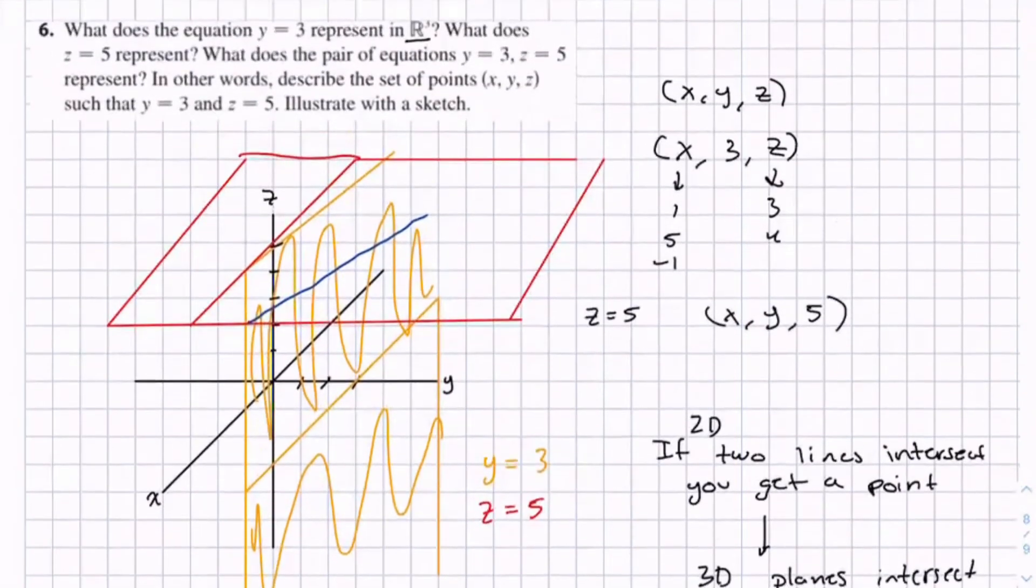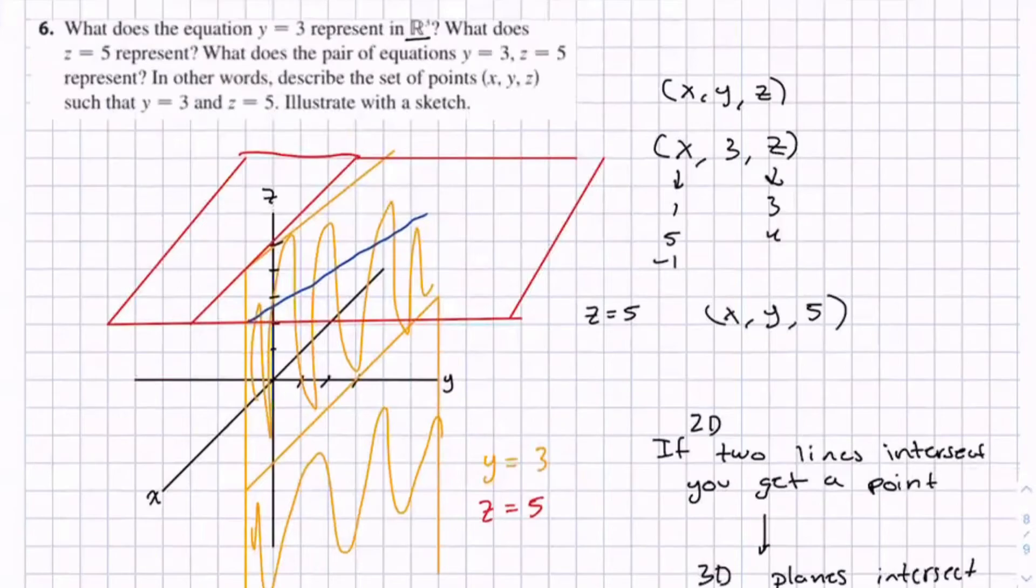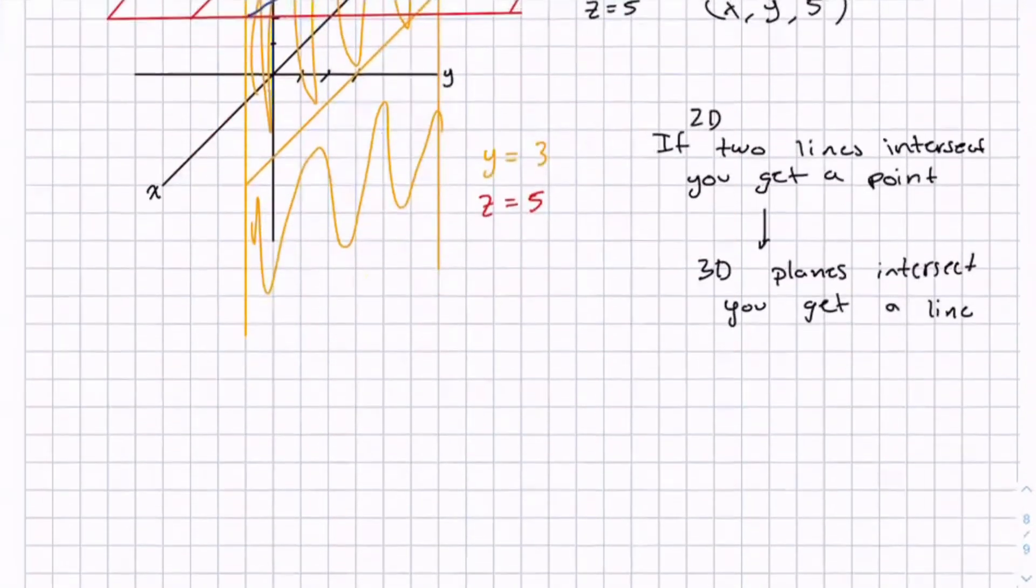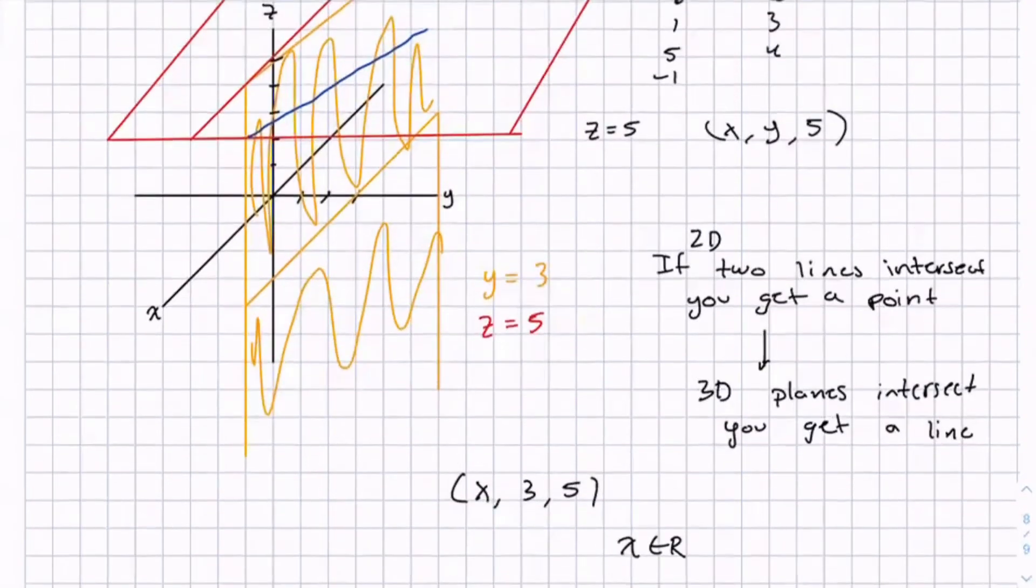And you can describe this line bounded by, because we know y equals 3 and z equals 5 for this line. So we have (x, 3, 5). Then x can equal all real numbers. This creates a line.